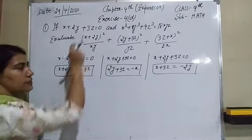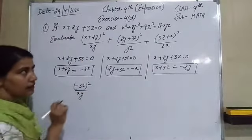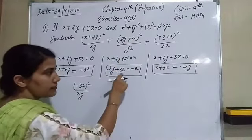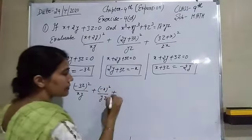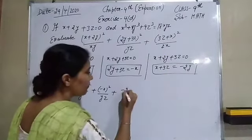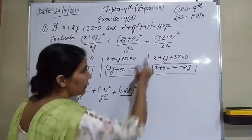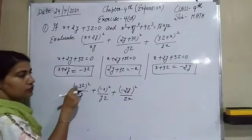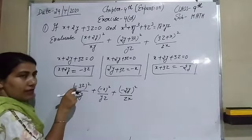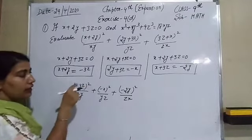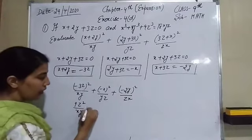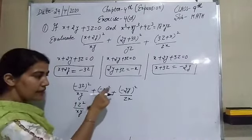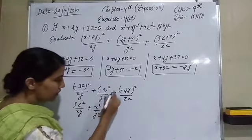Now we substitute these values. (x + 2y)² / (xy) becomes (−3z)² / (xy). Since the power is even, it becomes positive: 9z² / (xy). Then (2y + 3z)² / (yz) becomes (−x)² / (yz), which is x² / (yz). And (3z + x)² / (zx) becomes (−2y)² / (zx).